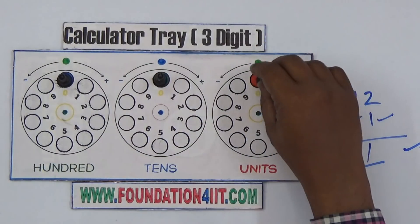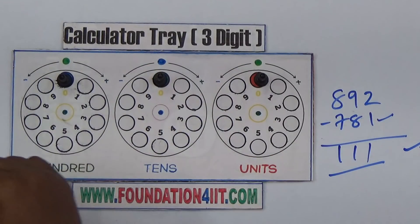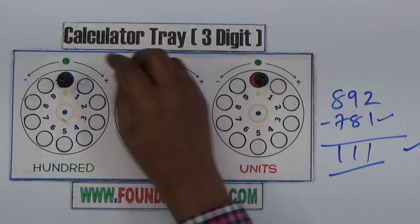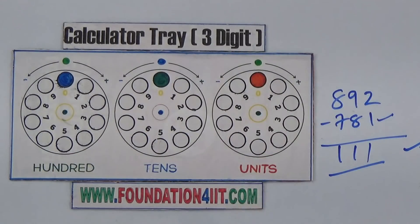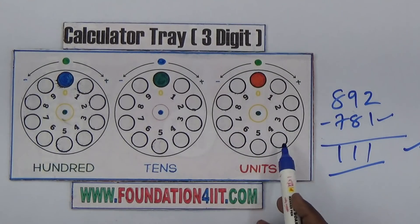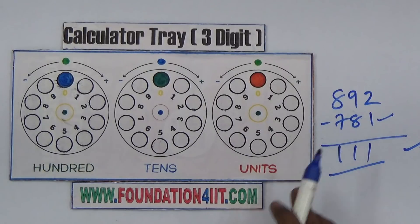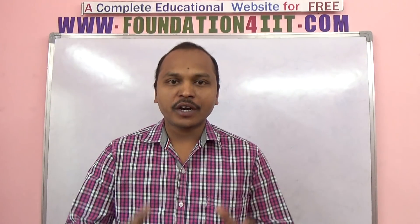I made this only up to 3 digits, but if you extend the circles you can handle infinite digits. If you add one more circle it becomes up to 4 digits. This calculated tray is especially useful for primary and pre-primary students to understand the concept of difference between units, tens, and hundreds. You can increase the number of circles to handle more digits.